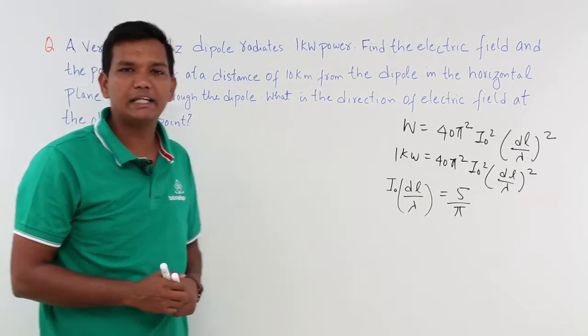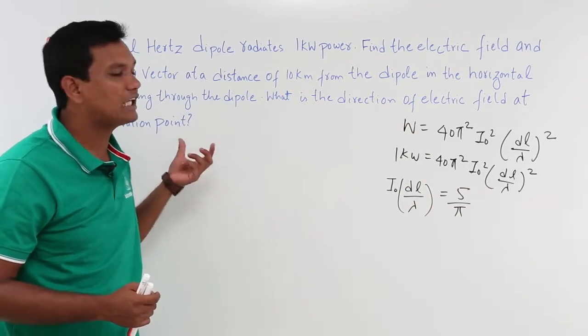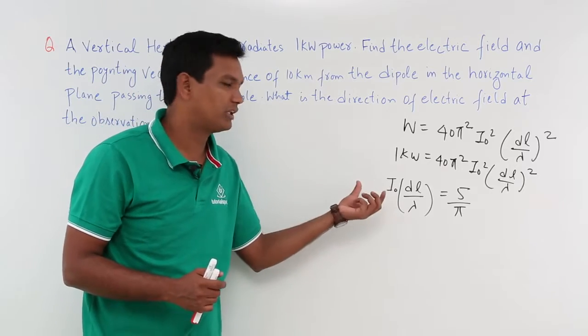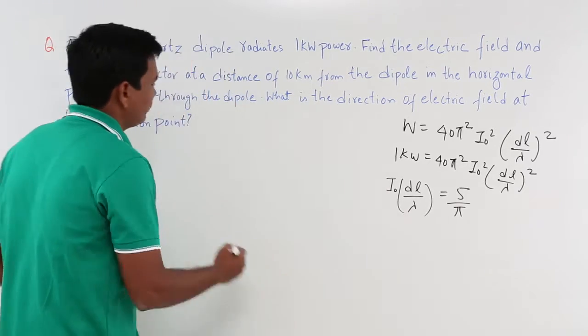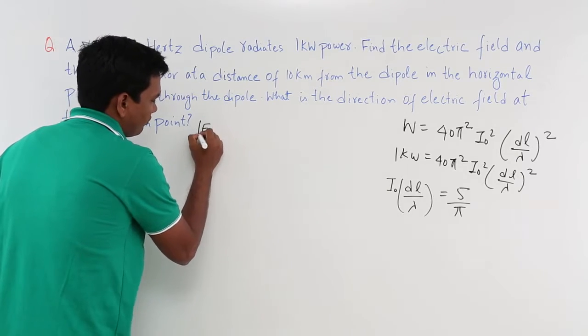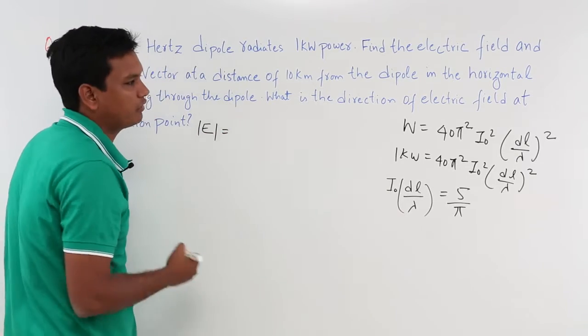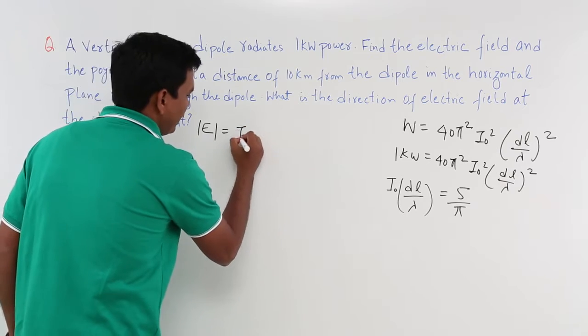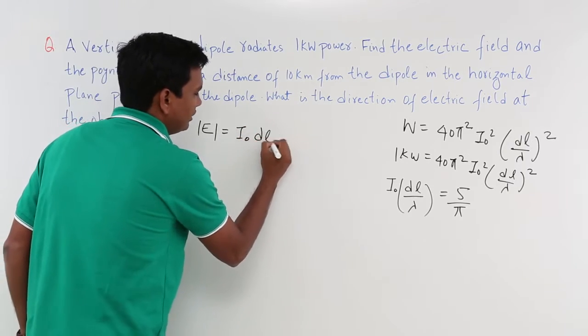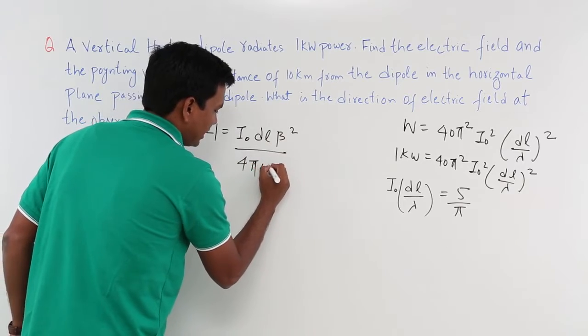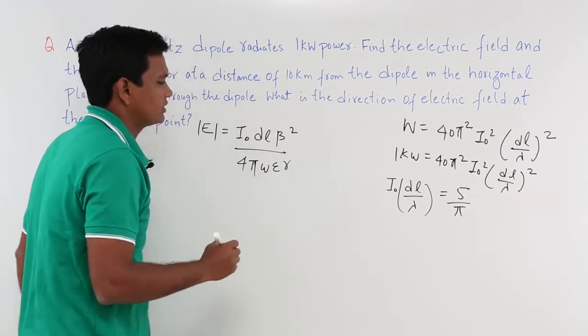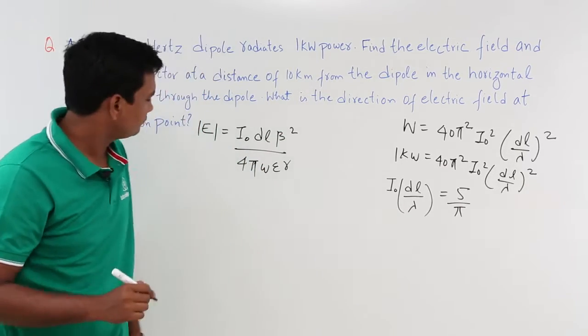Now what is electric field? We are bothered about electric field magnitude. We will not be taking care of the direction, we are bothered about electric field magnitude. The electric field would be given by if I want to find it out, it will be I₀DL β²/(4πωε₀r). This is what is electric field.